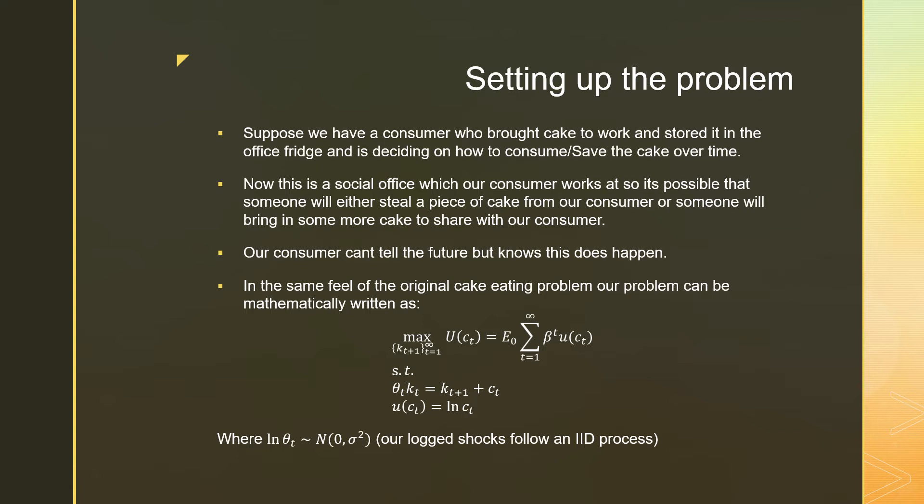Our consumer can't really tell the future with regards to this, but he knows that this does happen. In the same field of the original cake eating problem, let's write our problem mathematically as the following, which is maximizing this lifetime utility where our choice variable is cake in the next period. And that's going to be the expectation of this series of lifetime utility, discounted lifetime utility based on information at time zero subject to theta T KT, which is theta, which is our shock term times KT,